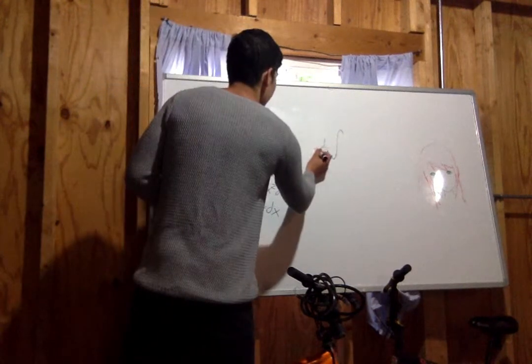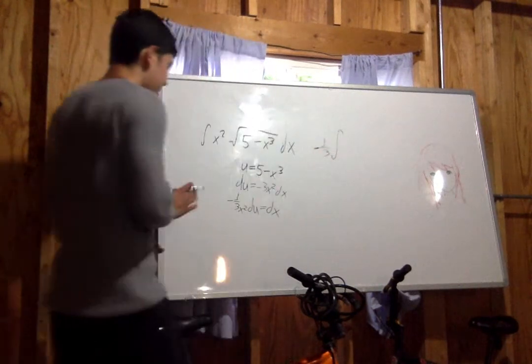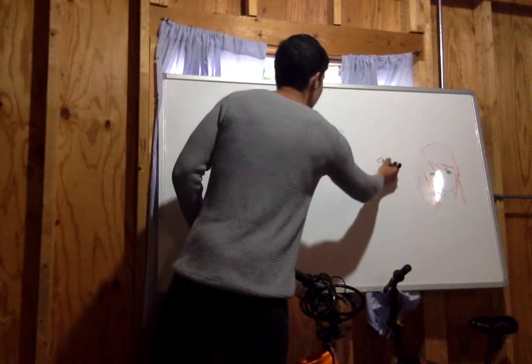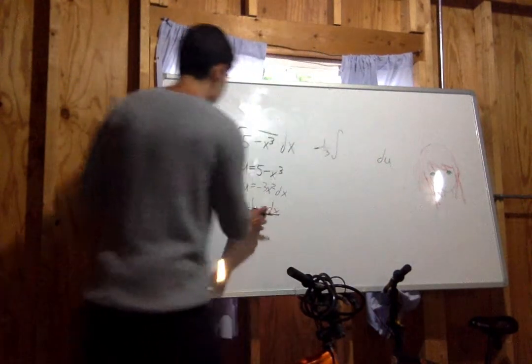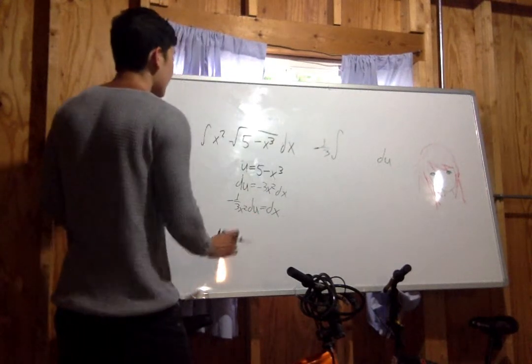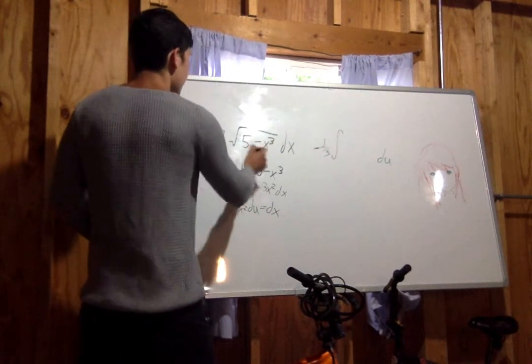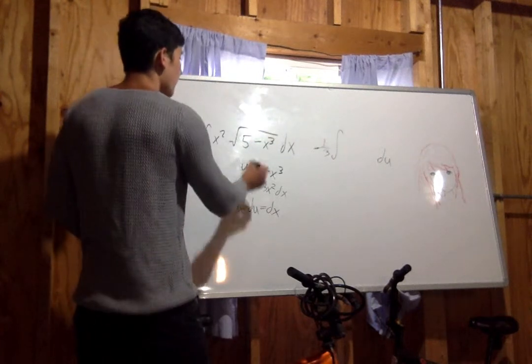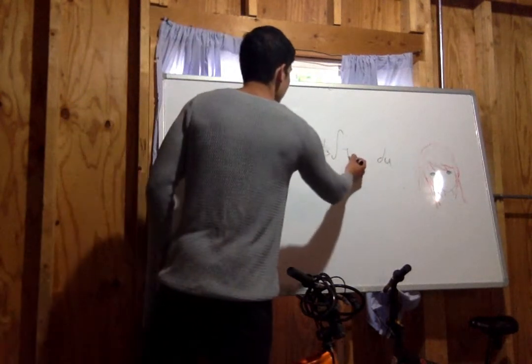This is negative 1 third. You have du because you replaced dx with that entire expression. The 5 minus x cubed is what you replace with u, so it's just the square root of u.